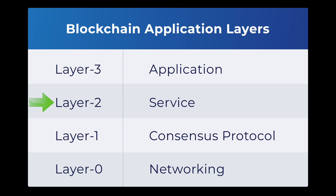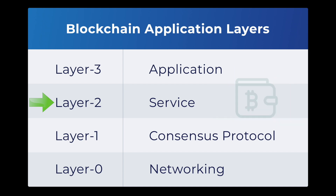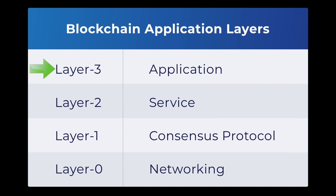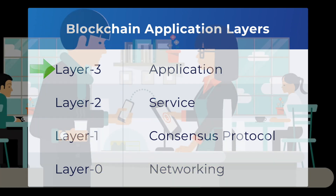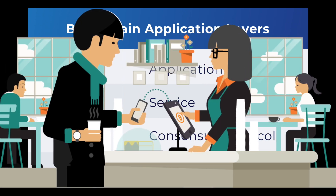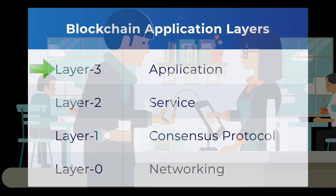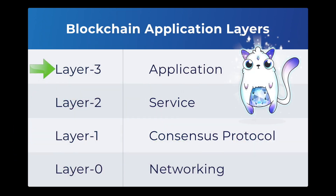Layer 2 is the service layer. This is where state channels, digital assets, wallets, and off-chain computing live. This is the layer where you store your crypto assets, like on Coinbase. At the very top is layer 3, which is the application layer and is where decentralized apps and browsers live. This includes user interfaces that you see and interact with. For an example, think of games built on blockchain like CryptoKitties.